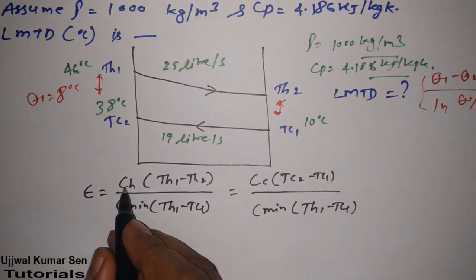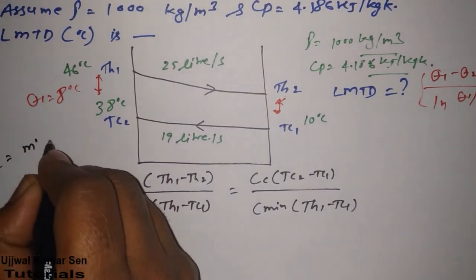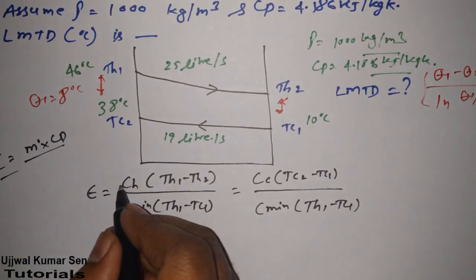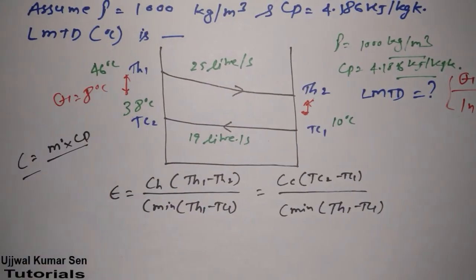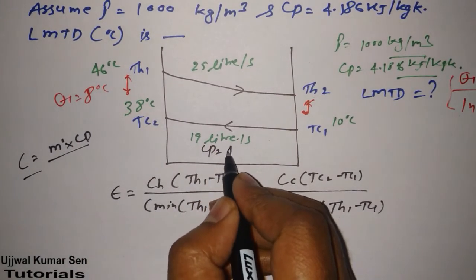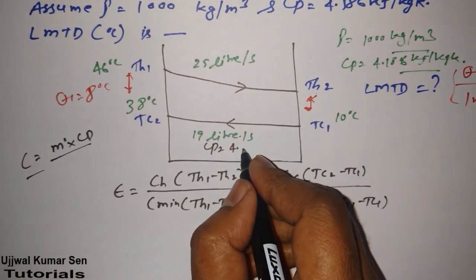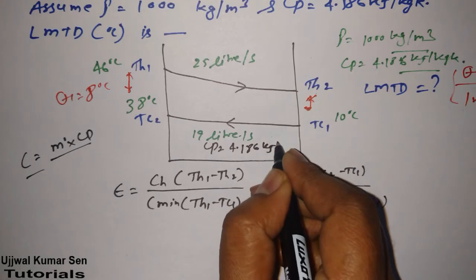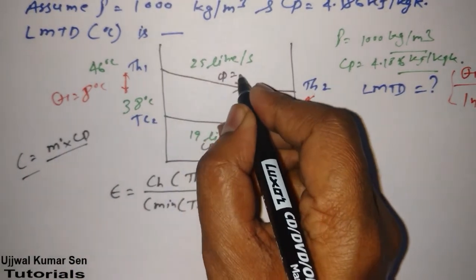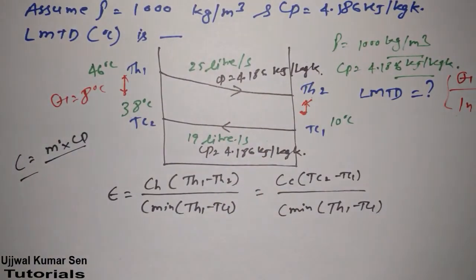So let me share with you what is CH, what is CC, what is C minimum. This C means heat capacity, that is mass flow rate multiple Cp. So if I am talking about hot fluid, then mass flow rate and Cp of the hot fluid. So the fluid is water. Cp for both the cases would be 4.186 kilojoule per kg Kelvin for this case and for this case also.